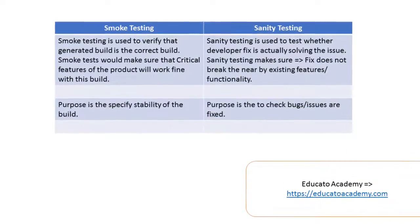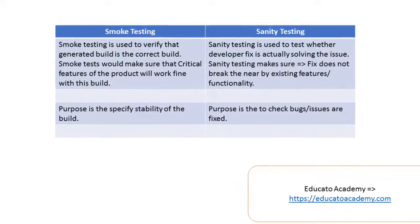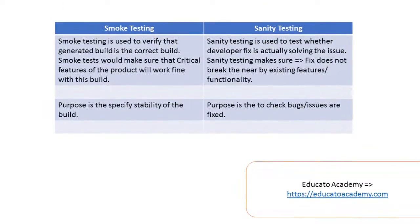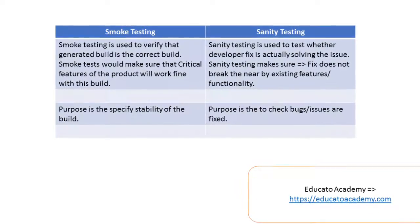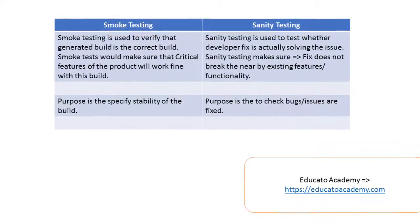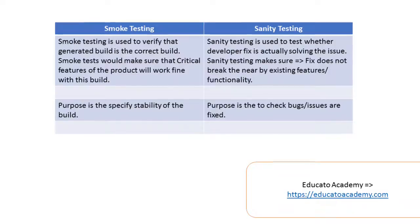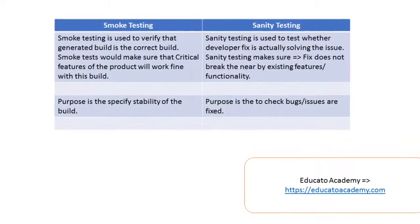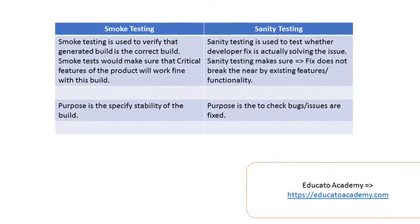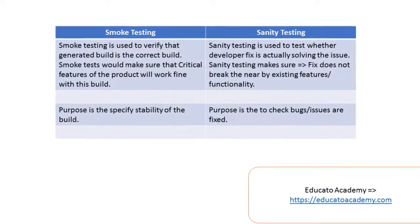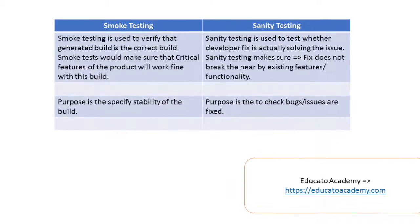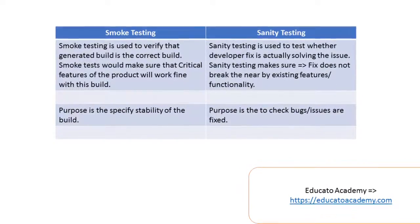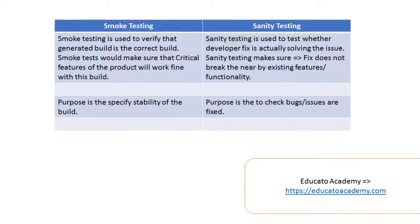You can remember smoke testing as: if the critical functionalities of the system or machine are failing, it means it's going to catch fire and generate smoke. Sanity testing is a specialized health checkup. Smoke testing is typically done by the DevOps teams — the team responsible for generating the builds — and sanity testing is usually done by either the testing team or the developers.